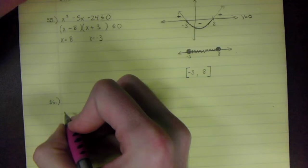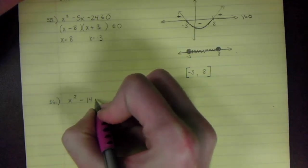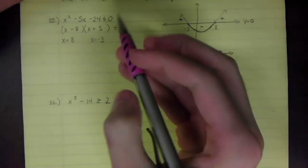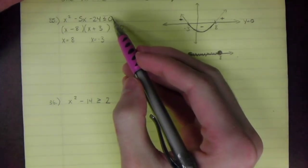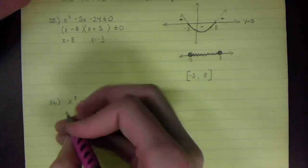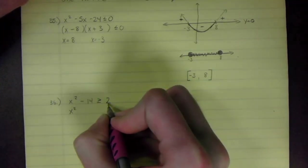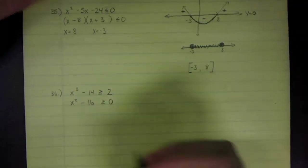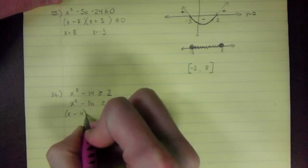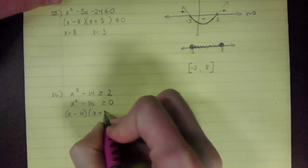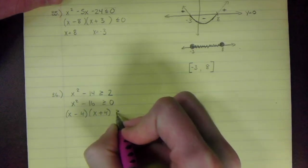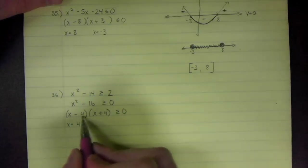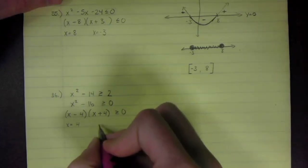The next one is x² − 16 ≥ 0, but notice the original had x² − 14 ≥ 2, so we first subtract 2 to get everything equal to 0. Then we factor. We have a difference of two squares, which factors as (x + 4)(x − 4), giving x-intercepts at positive 4 and negative 4.